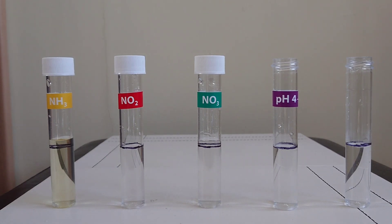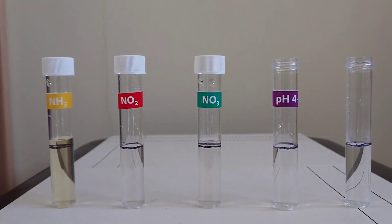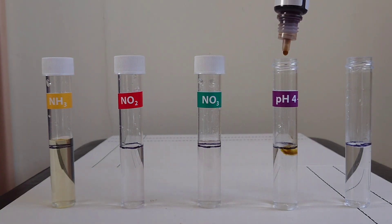Next we have pH. All this is is one bottle again, like the nitrite. This one is five drops and it develops instantly.